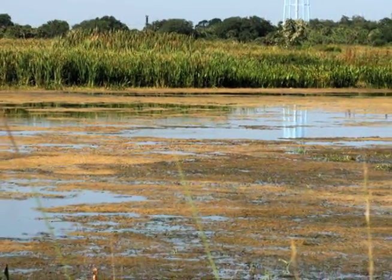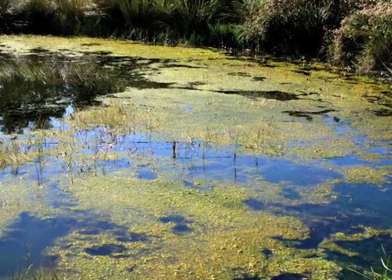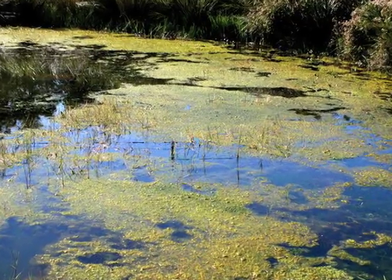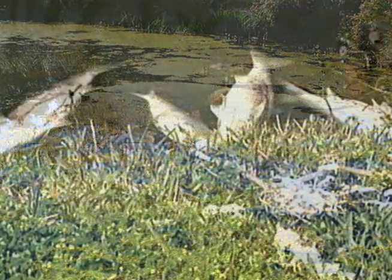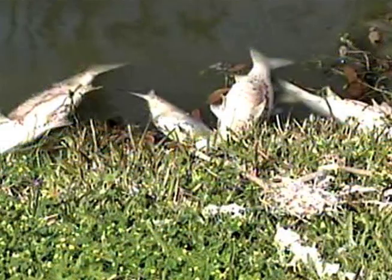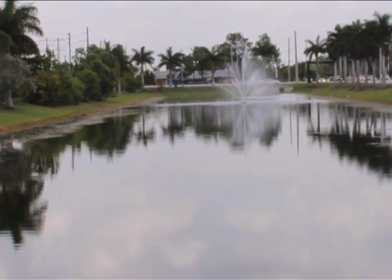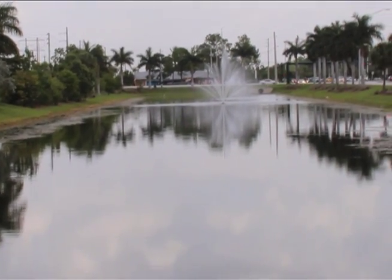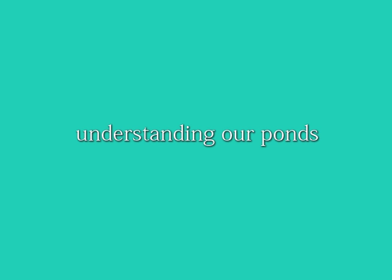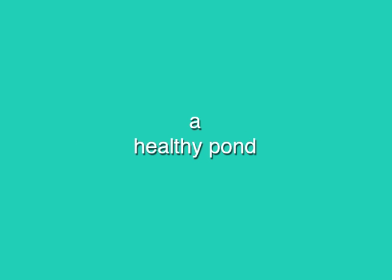People residing on some of these ponds have complained about unsightly algae blooms and dead fish floating on the surface of the water. The reality is these ponds have become nutrient storage facilities, not nutrient removal systems. To get a better understanding of what's happening, let's start by looking at a healthy pond.